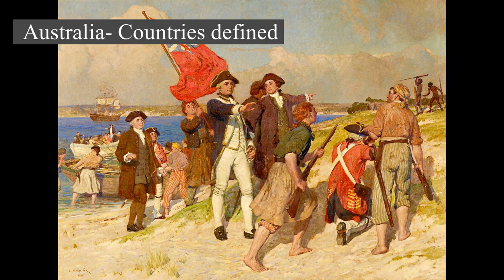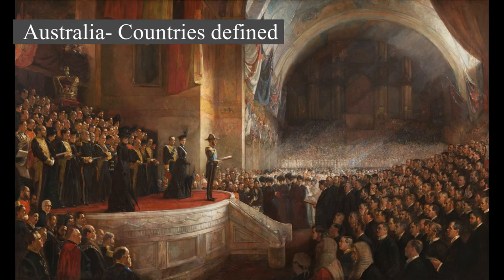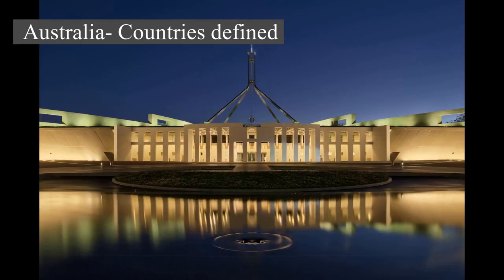Australia is a highly developed country with a high-income economy. As of 2022, it was the world's 14th largest economy with the 9th highest per capita income. In 2017, it ranked as the 5th highest on the Human Development Index. Australia is a regional power and has the world's 13th highest military expenditure. Australia ranks amongst the highest in the world for quality of life, democracy, health, education, economic freedom, civil liberties, safety, and political rights, with all its major cities faring exceptionally in global comparative livability surveys.